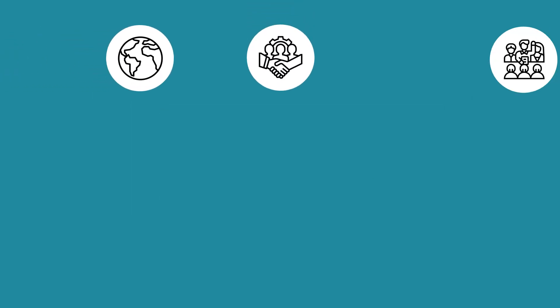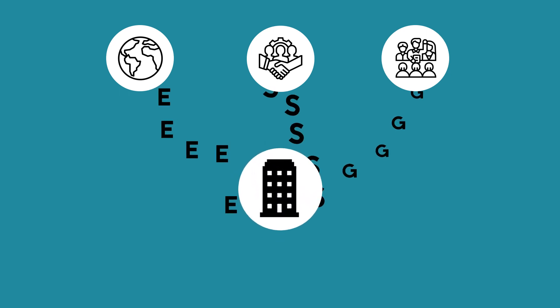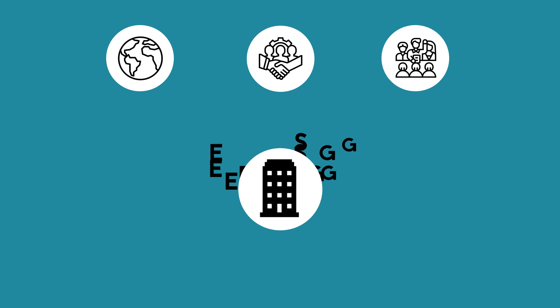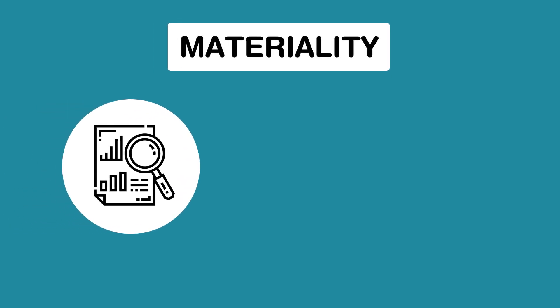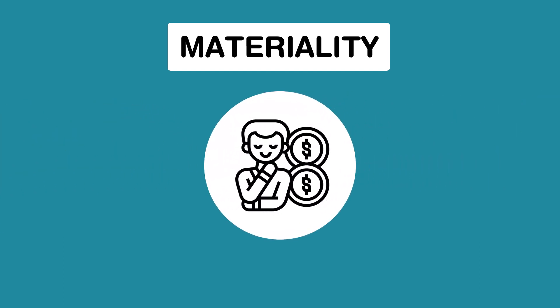Throughout this section, we have explored some of the environmental, social, and governance factors. Evaluating a company against all of the possible ESG issues would be extremely challenging, not to mention unproductive, as not all ESG issues affect all companies. It is important to focus on issues that matter. The concept of materiality exists in virtually all sustainability reporting frameworks and standards. It is also a fundamental concept in capital markets and regulated corporate disclosure. In essence, materiality refers to information that is reasonably likely to be important to investors in making investment decisions.